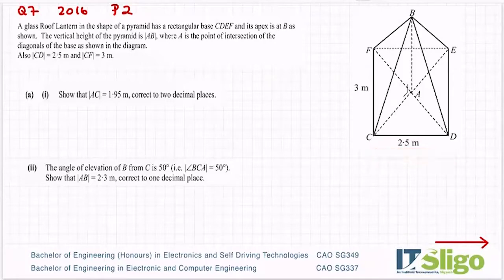CD is 2.5, CF is 3, and because it's a rectangle, FE is also 3, and EF there at the back is also 2.5. Show that AC is equal to 1.95 meters correct to two decimal places.